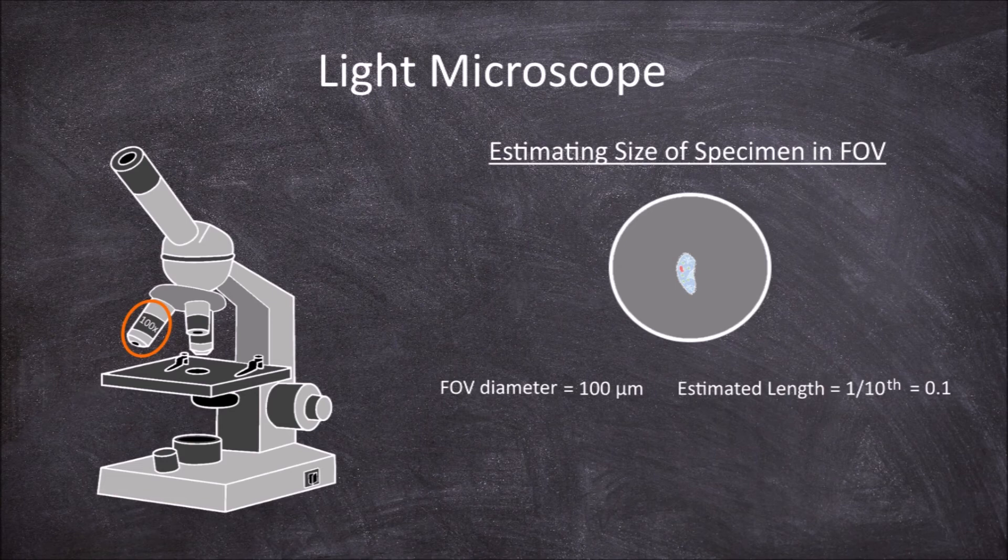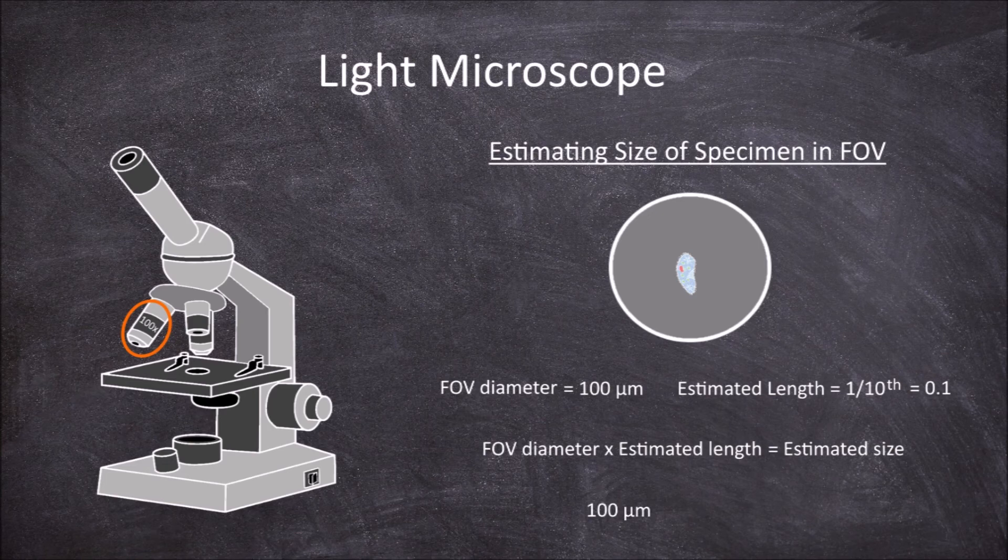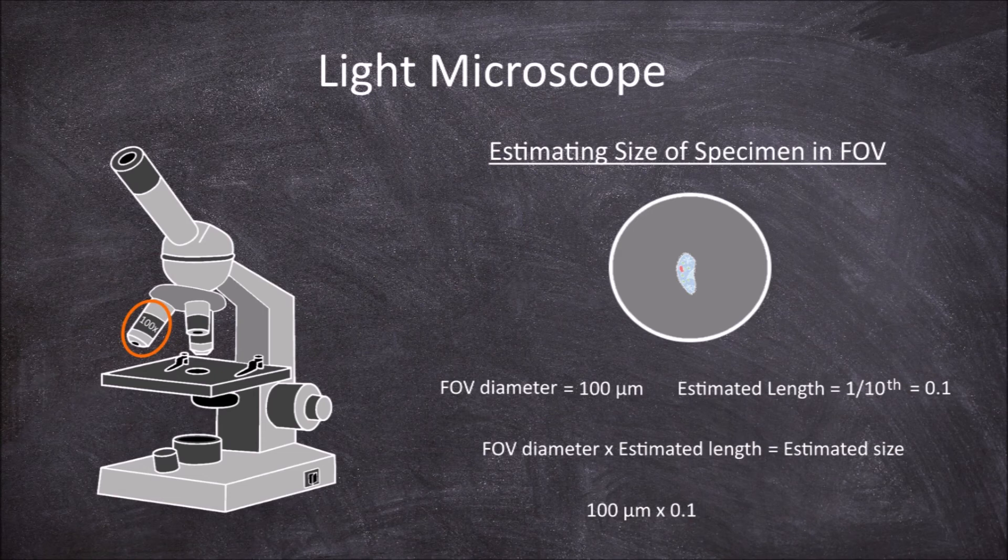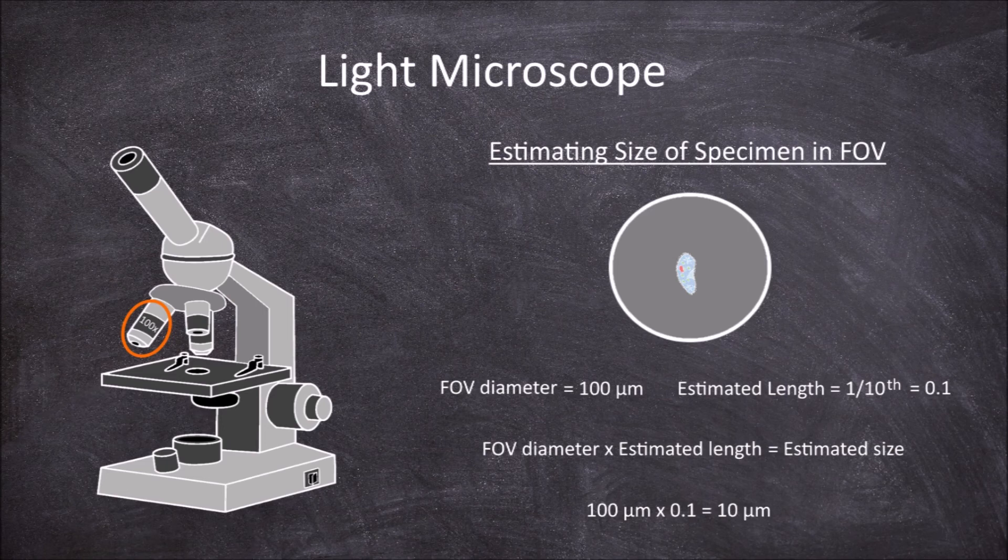You then need to multiply the field of view diameter by this estimated fraction to get the estimated size of the specimen. If the field of view diameter was 100 micrometers, and the estimated length is around one-tenth, so 0.1 of the field of view diameter, it would be 100 micrometers times 0.1, which gives an estimated size of 10 micrometers.